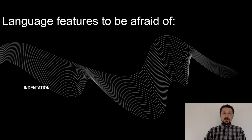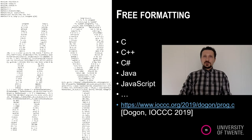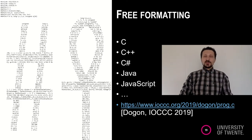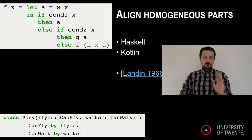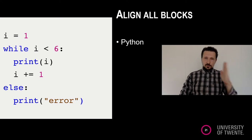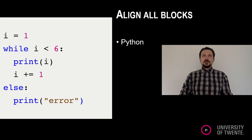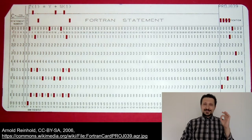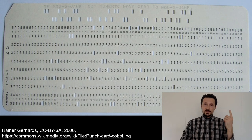The first scary language feature is indentation. Some languages like C allow free-form indentation — the obfuscated C contest shows that formatting doesn't matter at all to the compiler. In Haskell, you align specific homogeneous parts like do-blocks or let-in expressions, but the compiler doesn't care about the rest. In Python, you need to align all blocks. In legacy languages, indentation was a design guideline tied to the punch card era: one statement equals one punch card.